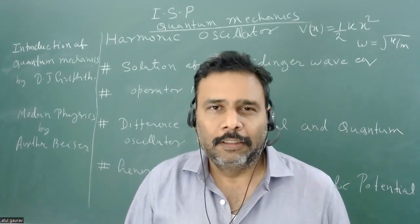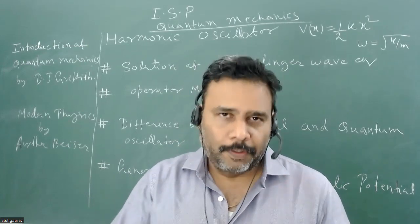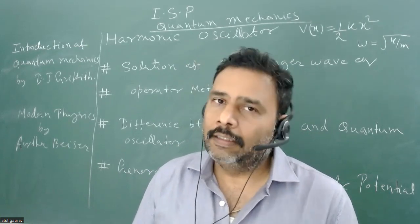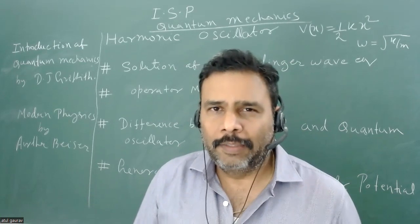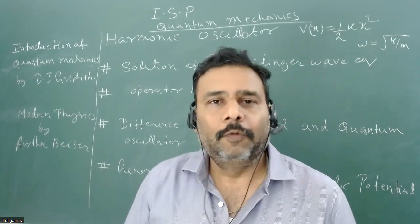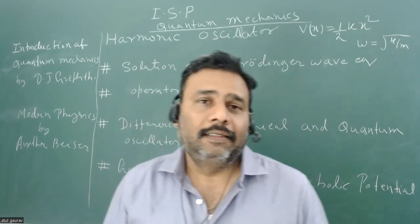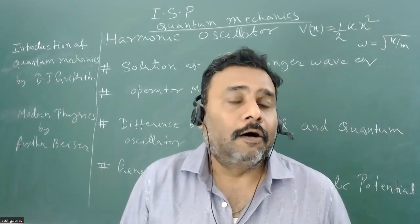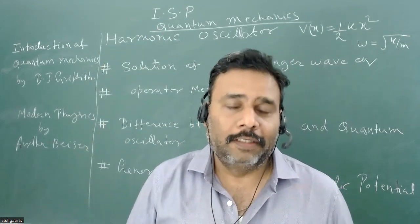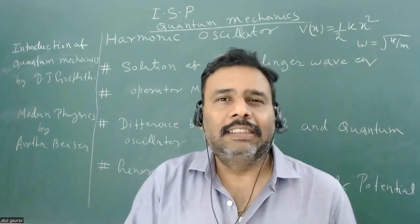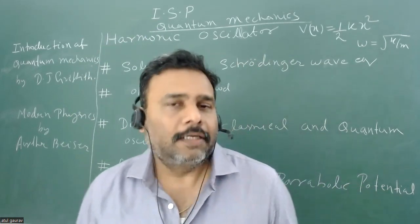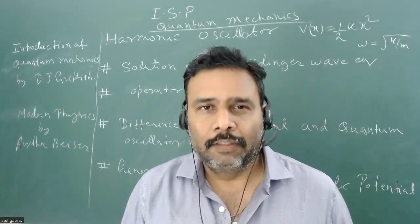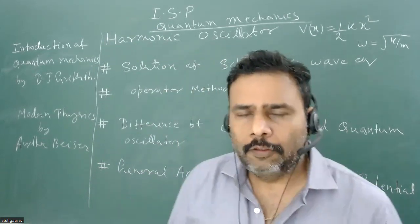Everything can be connected from this particular topic, so try to make proper notes about whatever I have discussed and whatever you find in your books. Go for either DJ Griffiths or Arthur Beiser — I suggest you go for both because both are very important. One interesting thing they can ask is the difference between classical and quantum mechanical harmonic oscillator, or what happens for higher values of energy — is the system behaving classically or quantum mechanically? This is given beautifully in Arthur Beiser, and the mathematical part is in DJ Griffiths. You can also go for Shankar's book, which is very nice for abstract notation and operator method.